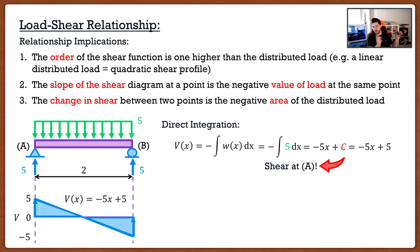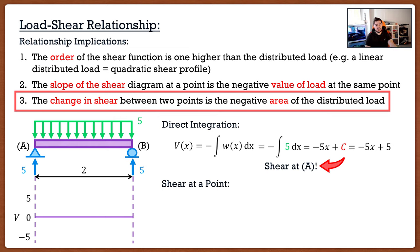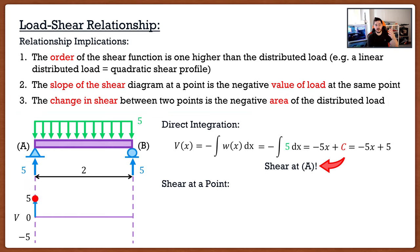For the area method: we said the change in shear between two points is the negative area of the distributed load. Starting at the left of the beam at point A, we have a point load of five upward so our shear jumps to five. Then we deal with the distributed load. The change in shear between A and B is the negative of the area of the distributed load. The distributed load is a rectangle with height five and width two, so its area is ten. Including the negative sign, the change in shear from A to B is negative ten.